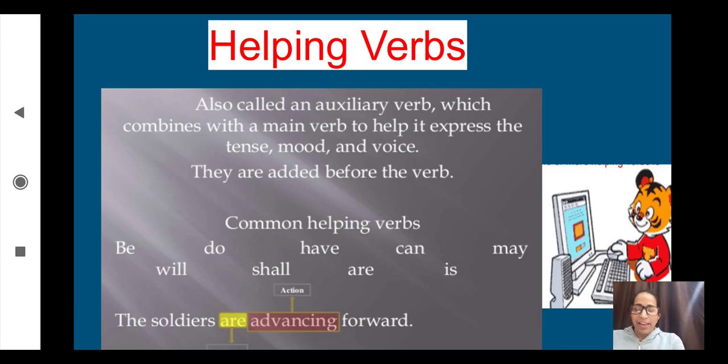Helping verbs, also called auxiliary verbs, are words which help a sentence to be completed and express tense or mood. See the example: these soldiers are advancing forward. What is the main action taking place? That is advancing. Who is advancing? The soldiers are advancing. Look at this word highlighted in yellow: are. This word is helping the main verb here. That is why this is your helping verb. More examples of helping verbs are: is, are, shall, will, may, can, etc.